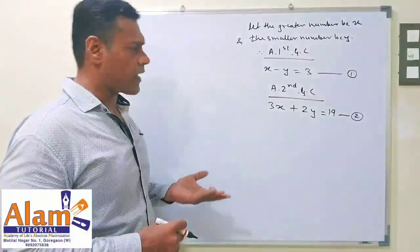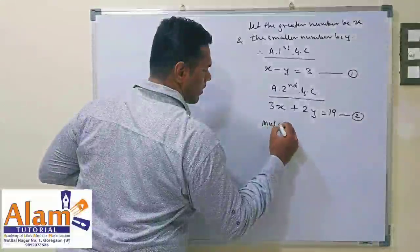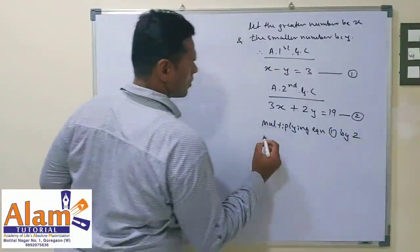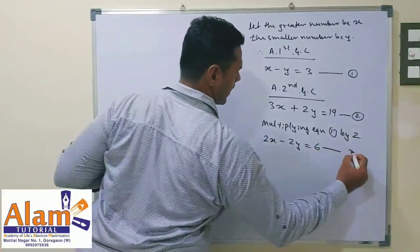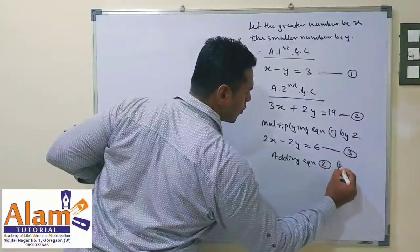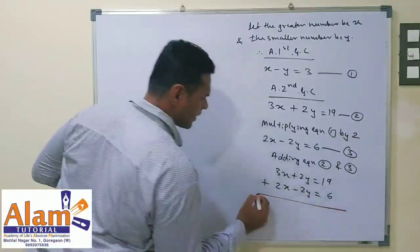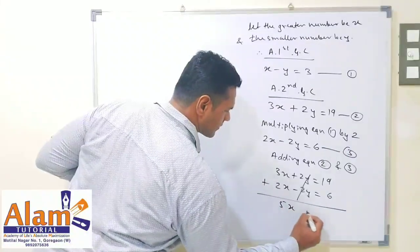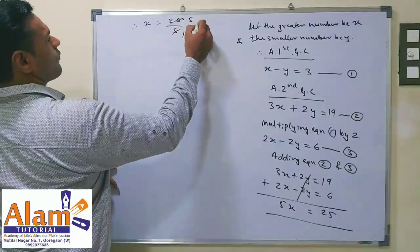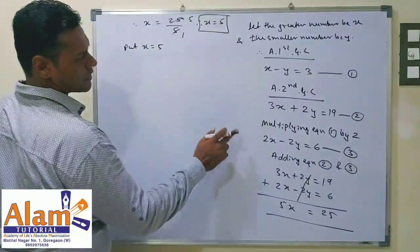We need to eliminate y. By multiplying equation 1 by 2, we get 2x minus 2y is equal to 6 — this is equation 3. Now adding equation 2 and equation 3: 3x plus 2y plus 2x minus 2y gives 5x, and 19 plus 6 gives 25. So x is equal to 25 divided by 5, which is 5. Therefore x is equal to 5.